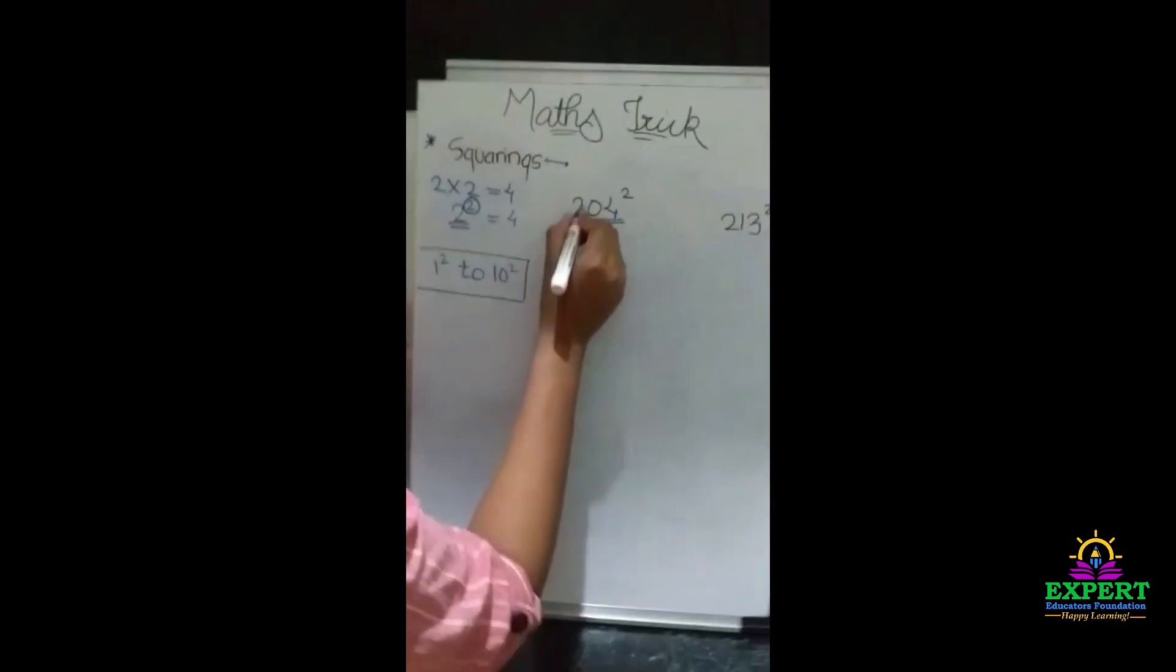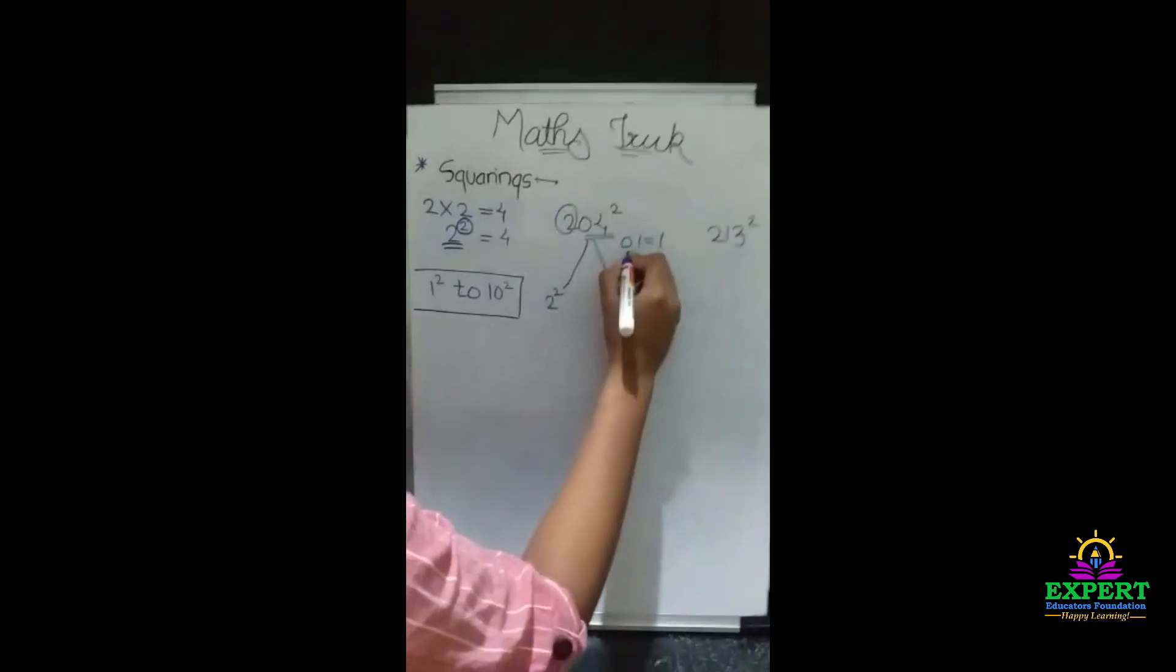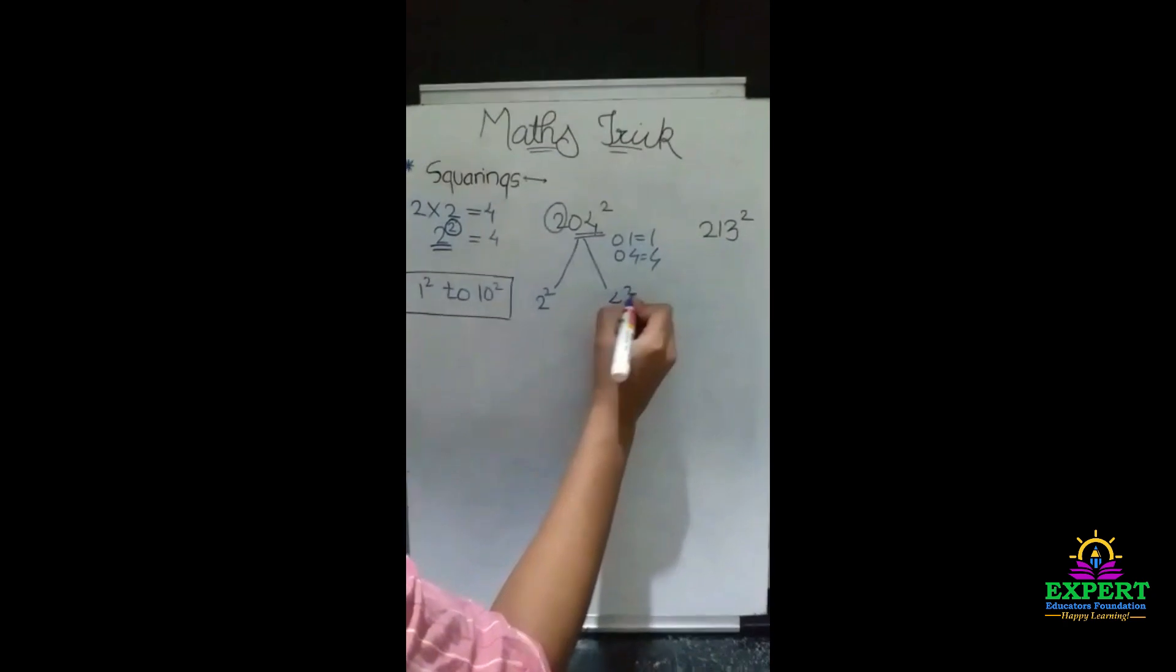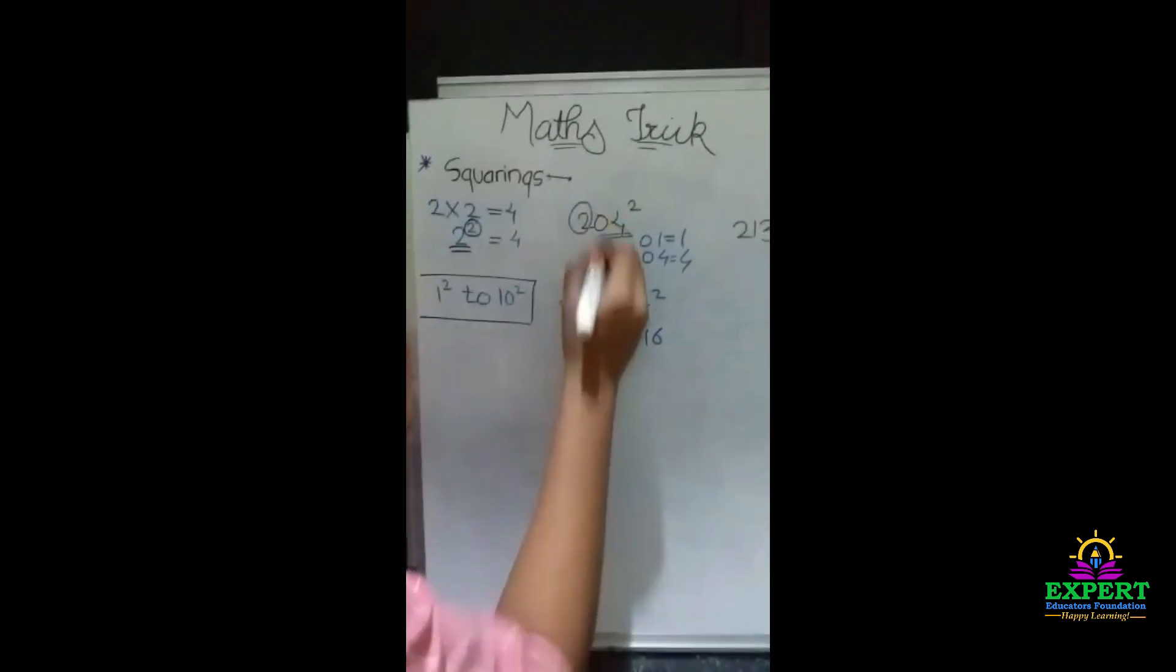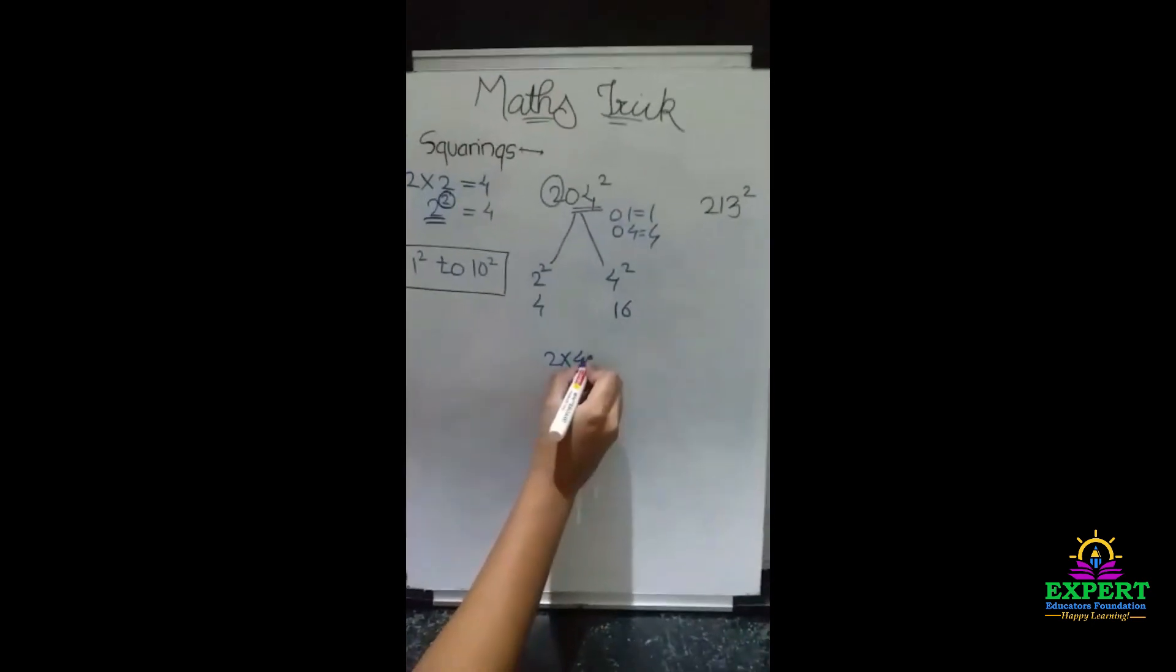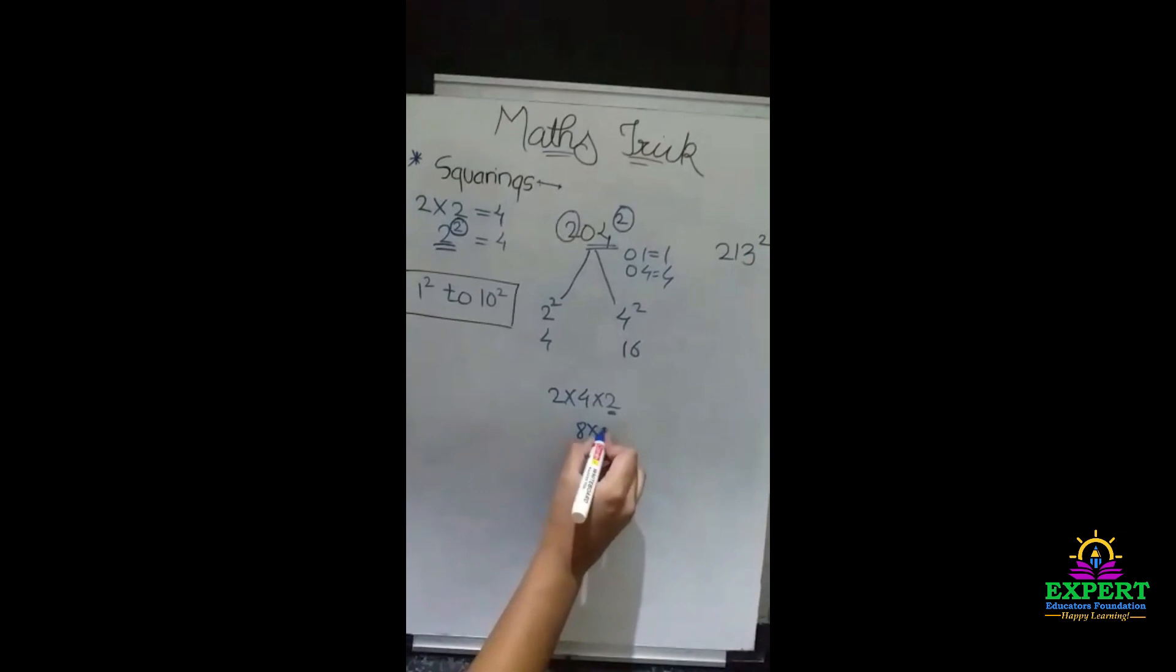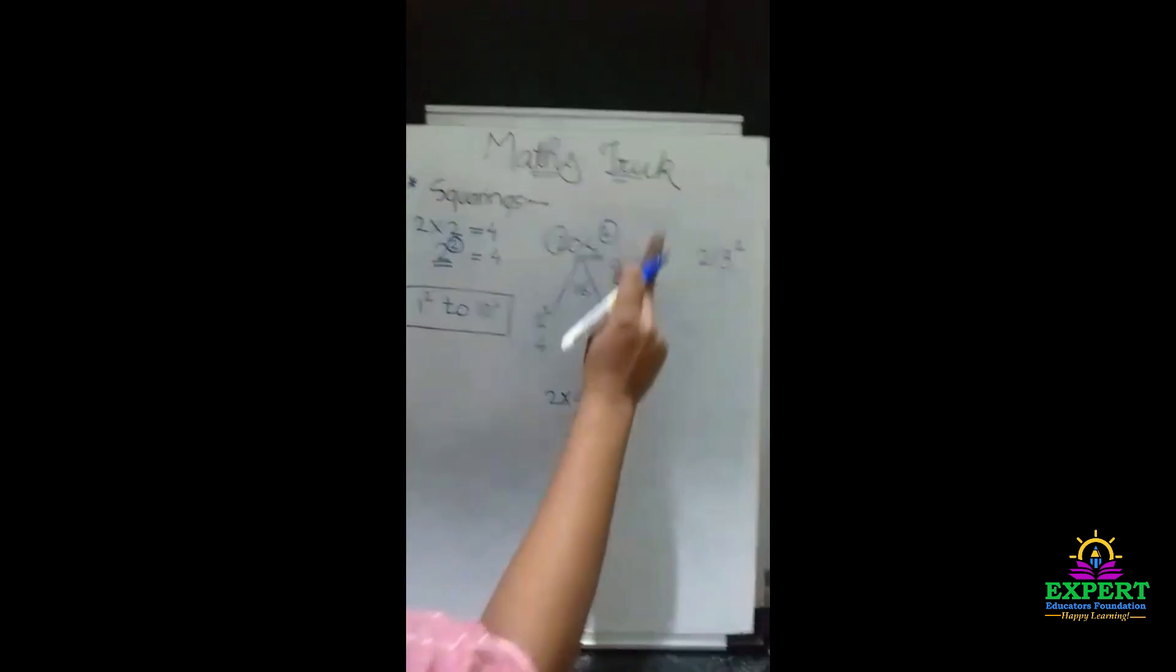First, we will take 2 squared and here 04. One means one we are considering, and 04 will be as only 4, so we will take 4 squared. 2 squared is 4, 4 squared is 16. Now here, first 2 into 4, okay, 2 into 4 into 2. 4 times 2 is 8, and 8 times 2 is 16. We will keep 16 in the middle.